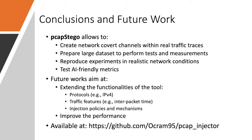So, in conclusion, we show that pcapStego can be used to create in an automated way network covert channels within realistic traffic traces. It allows to prepare larger datasets to perform tests and measurements, and also allows to produce AI-friendly metrics such as heatmaps that can be used to spot the presence of network covert channels.